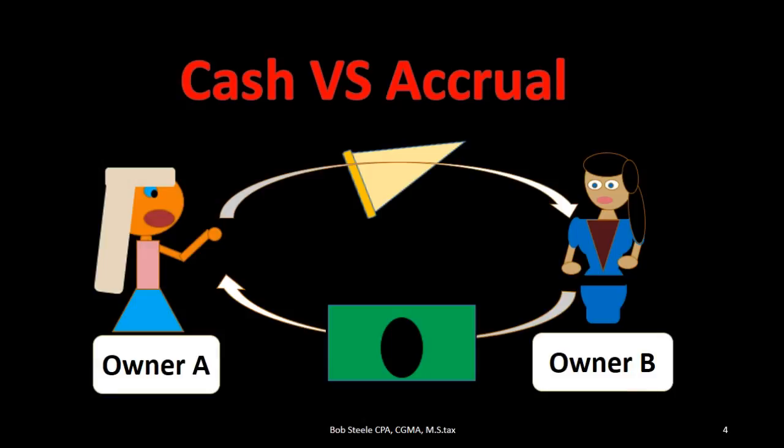First, we have an example where the two methods will record the same transaction; then we'll move to some examples that will be distinct. The important thing here is that looking at this transaction without knowing anything else, we would not be able to tell whether we're on a cash method or accrual method. Let's see why.